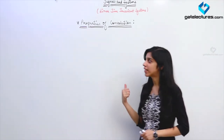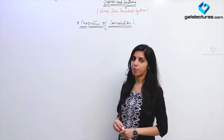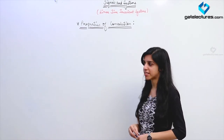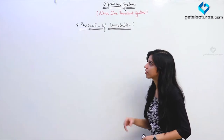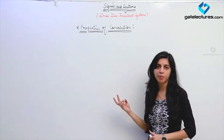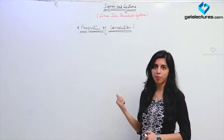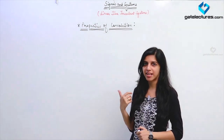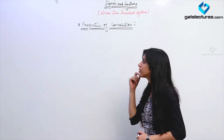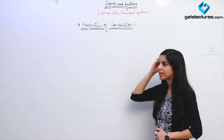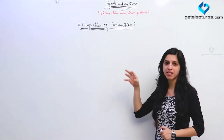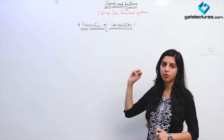We have already looked at some properties of convolution in the previous lecture. We looked at associativity, distributive property, commutative property, shifting, scaling, etc. Now we are going to see what convolution with some basic signals is going to look like.